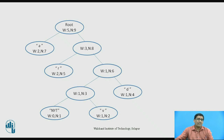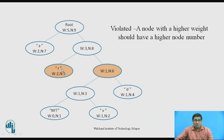Now consider another example. Here for code R, weight is 2 and N is 5. For another node, weight is 1 and N is 6. But here the adaptive Huffman code property is violated, because a node with higher weight should have a higher node number. Here weight is 2 and N is 5, but weight is 1 and N is 6 — N is larger. Therefore this adaptive Huffman coding property is violated and not satisfied. We will see next what to do when this situation occurs.